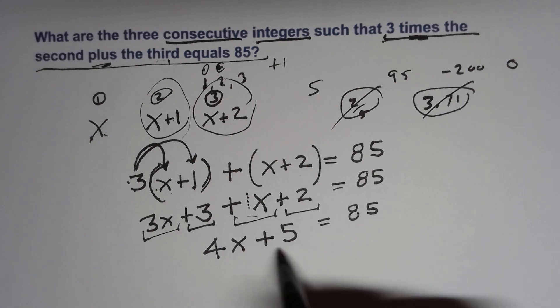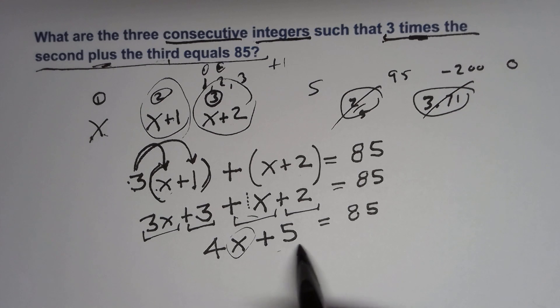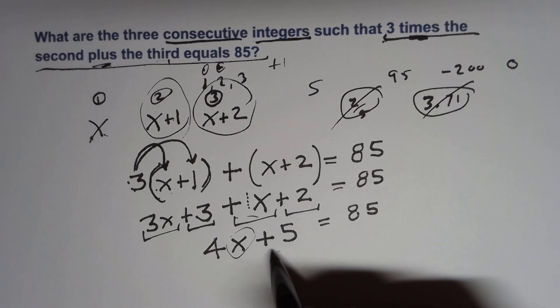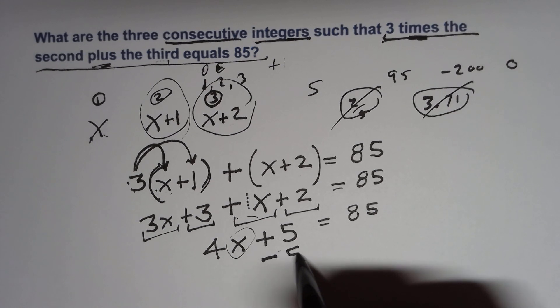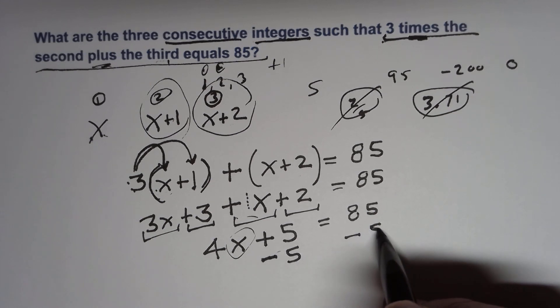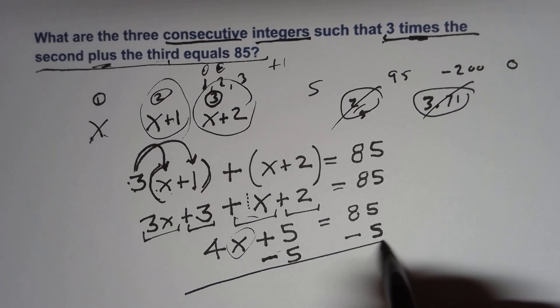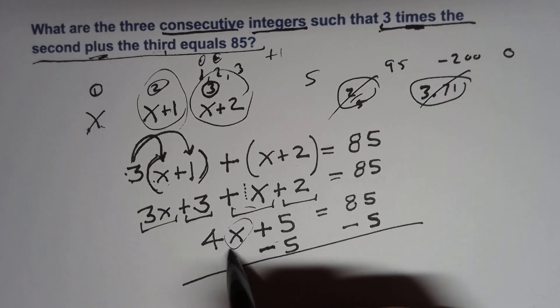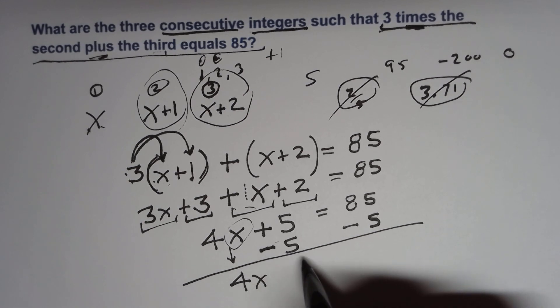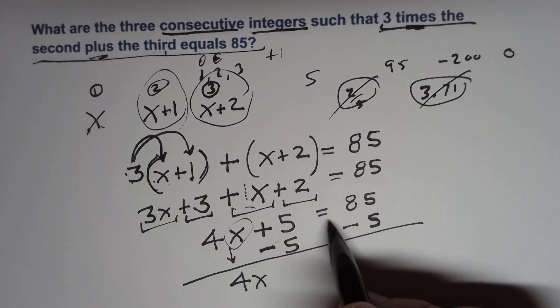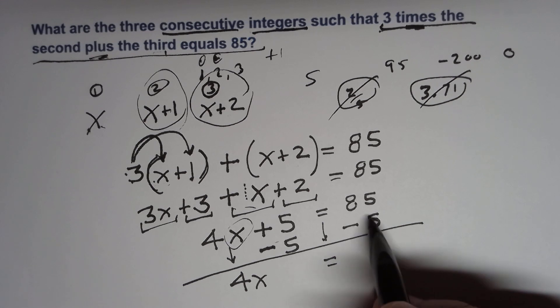And I bring down my 85 here. Next. Now we're going to clean it up and I want to get this X by itself. So let's get this integer out of here. So this kind of loose number and we do it by doing the opposite. So I've got a plus five. So I'm going to subtract five. If I subtract it from one side, I need to subtract it from the other side. So I just bring this down. We didn't do anything to it. Four X, five minus five is zero. I don't need to write that. I bring down my equal sign and I've got 85 minus five. That's equal to 80.